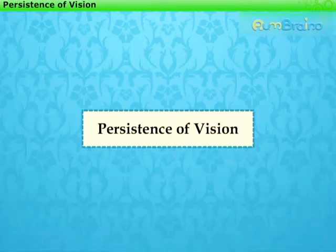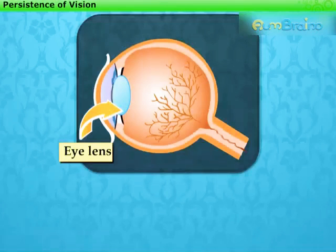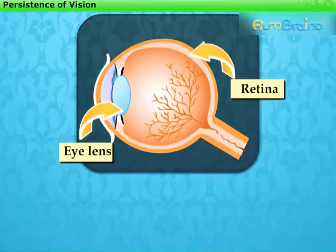Persistence of vision. We have learnt that the eye lens focuses light and forms an image on the retina.